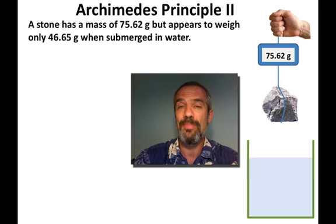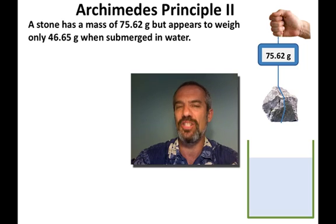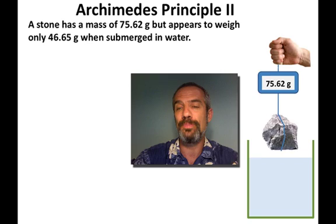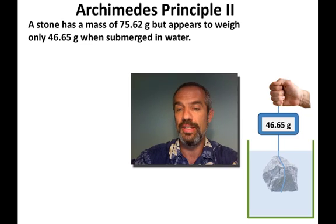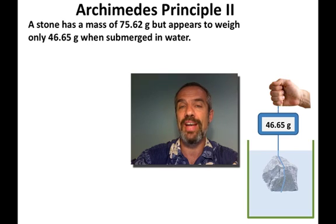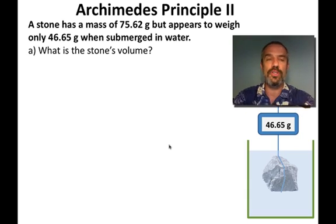As we talked about in the Archimedes' Principle Part 1 video, that actually is being buoyed up a little bit by the air around it, but that's probably negligible compared to how much it gets buoyed up by the buoyant force of the water. In water it appears to weigh only 46.65 grams — that loss of weight is due to the buoyant force caused by the water. So we have that visual, and now we'll get to our first question: what's the stone's volume?